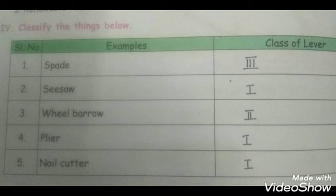Classify the things below. Spade, class 3, because load is in between effort and fulcrum. Seesaw, class 1, fulcrum is in between load and effort. Wheel barrow, class 2. Plier, class 1. Nail cutter, class 1, because fulcrum is in between effort and load.